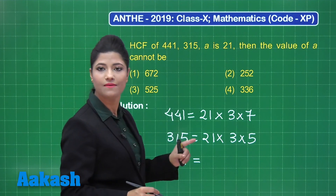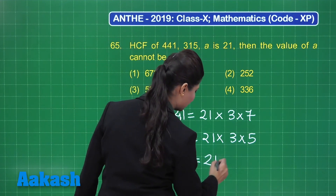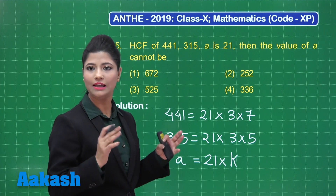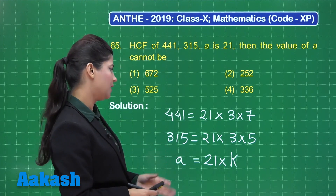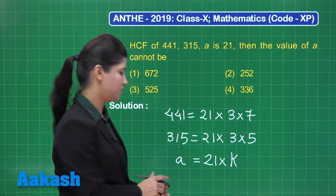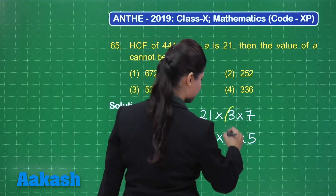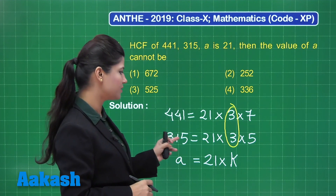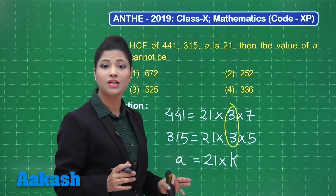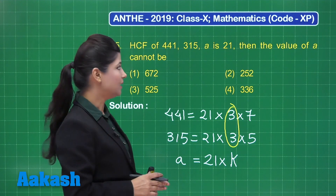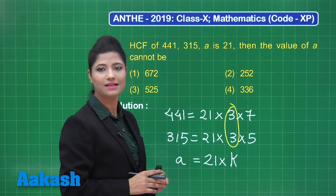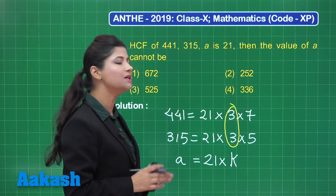315 can be factorized as 21 × 3 × 5. We do not know 'a', but since the HCF of the three numbers is 21, then 21 must be a factor of 'a', so a = 21 × k for some integer k. Since the HCF is 21, k cannot be equal to 3.